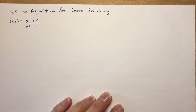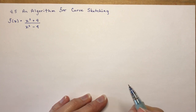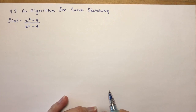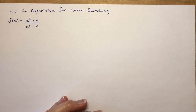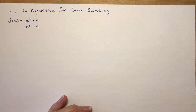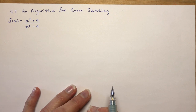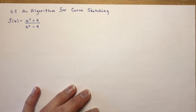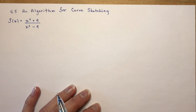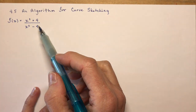Section 4.5: an algorithm for curve sketching. This is going to be our final lesson on curve sketching. I hope I've done enough different types of questions that you've got a good grasp of it. What I want to do today is go over the main characteristics of each of the function, the first derivative, the second derivative, and what these things tell you — so that even if your teacher doesn't give you a list, you should know what to do. You also need to rely on some of your knowledge from advanced functions.